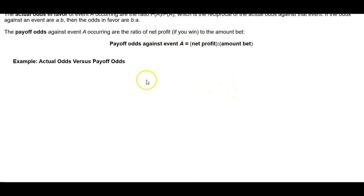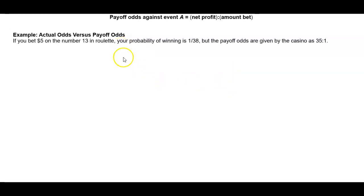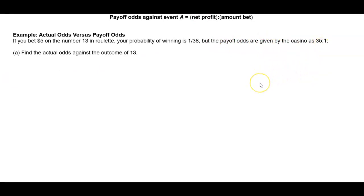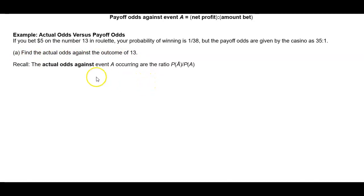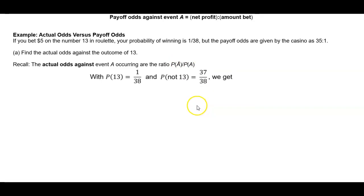Let's take a look at an example: actual odds versus payoff odds. If you bet $5 on the number 13 in roulette, your probability of winning is 1 out of 38, but the payoff odds are given by the casino as 35 to 1. For question A, find the actual odds against the outcome of 13. Recall that the actual odds against event A are the probability of the complement of A divided by the probability of A.